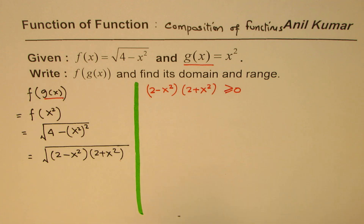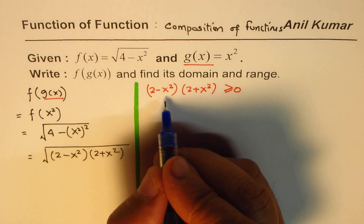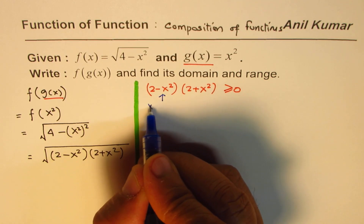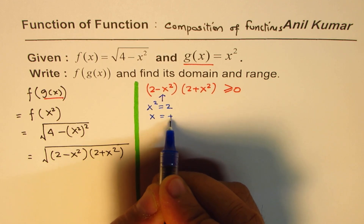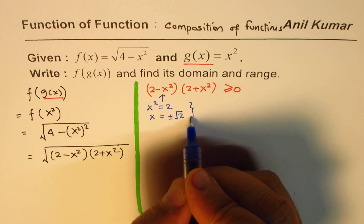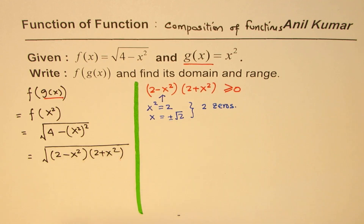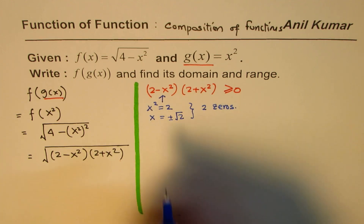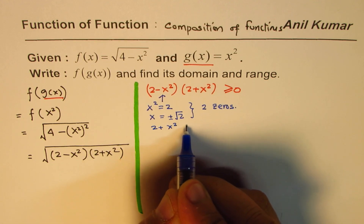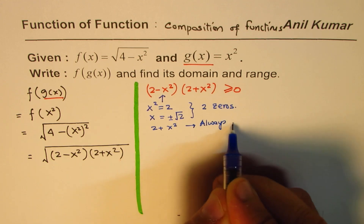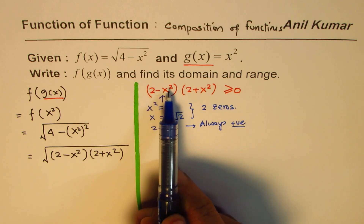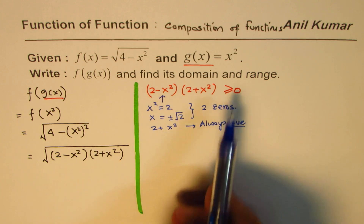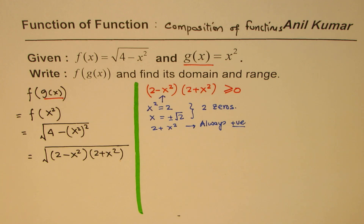This expression has zeros where x squared equals 2, giving x equals plus or minus square root of 2 — so two zeros. The term (2 plus x squared) is always positive. That means the sign of the whole product depends on (2 minus x squared): when it's positive, the product is greater than zero; when negative, the product is less than zero.